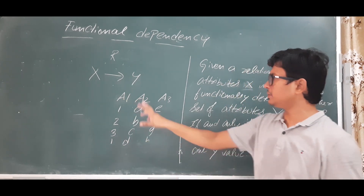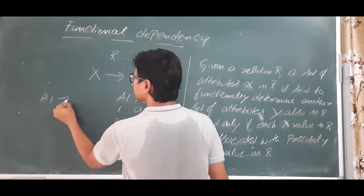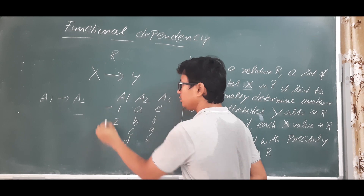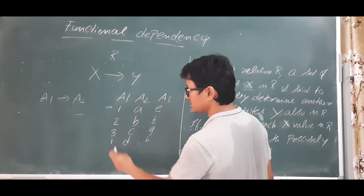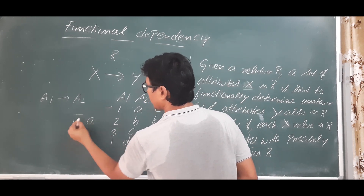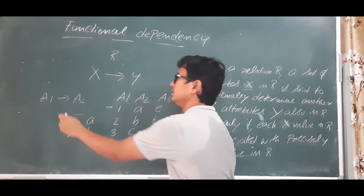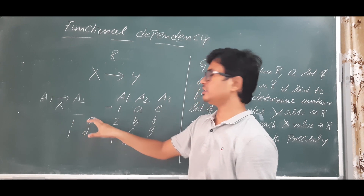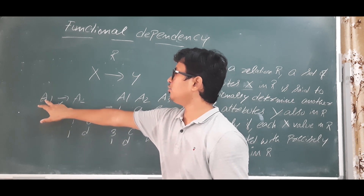Now let's check what functional dependencies are possible, taking single attributes. Can I write A1 functionally determines A2? We check: for A1 = 1, A2 is 'a', but for the same value 1, A2 is also 'd'. So one value of A1 maps to two different A2 values — that is inconsistent. Therefore A1 does not functionally determine A2.